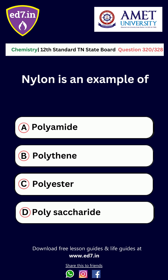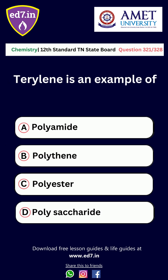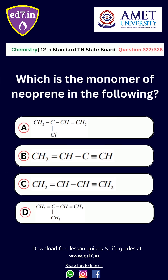Question number 319/320: Terylene is an example of — Option A: Polyamide, Option B: Polythene, Option C: Polyester, Option D: Polysaccharide. The correct option is Option A, Polyamide.